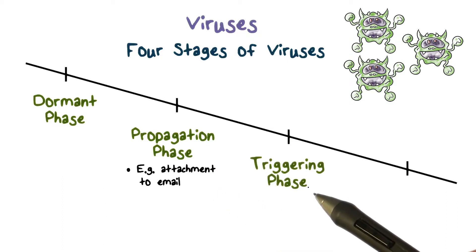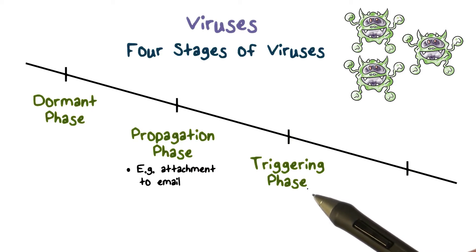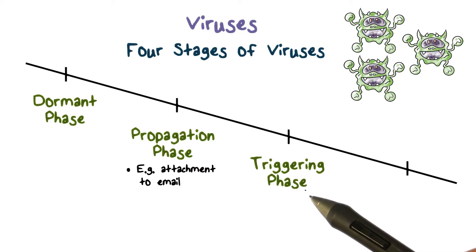The third phase is the triggering phase. This is when the host program is being run, and as a result, the virus is also triggered to run. For example, when a user clicks an email attachment that contains a virus, it triggers the virus to run as well.